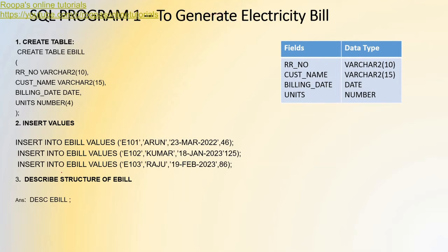Let us start with the explanation of the first program. The first program is to generate the electricity bill. The question is to create a table for generating the electricity bill. The fields given are: RR number, which is of data type VARCHAR2 — VARCHAR2 stands for variable character, a group of characters with length 10. Customer name is also VARCHAR2. Billing date is DATE. Units is the number of units consumed for that month, of type NUMBER — whatever size is given in your book, note that carefully.